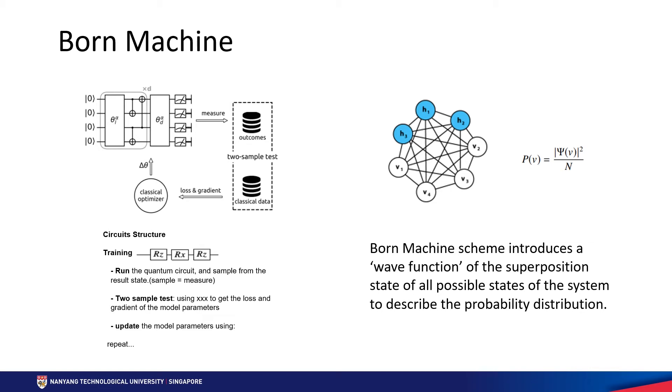Fourth, parameter updating: use squared maximum mean discrepancy to quantify the difference between the measurement result and the target result. Upgrade the parameters with gradient descent. Fifth, repeat step 2 to 4 till the sampling results reach wanted similarity with the target result.